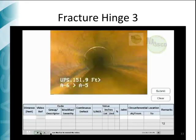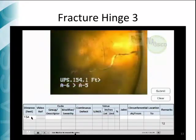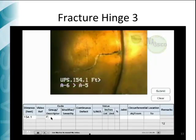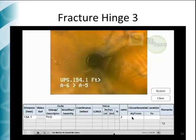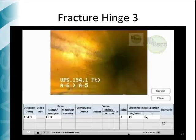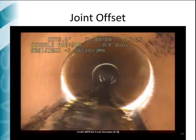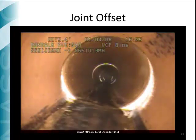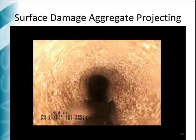The following video shows a fracture hinge 3 defect. As you can see, the pipe presents fractures at 12 o'clock, 3 o'clock, and 6 o'clock. This type of defect is coded as shown in the video. In this video, the operator is focusing on an offset joint. Finally, this video shows a surface damage aggregate projecting, or SAP defect. Note that this defect should be considered truly continuous.